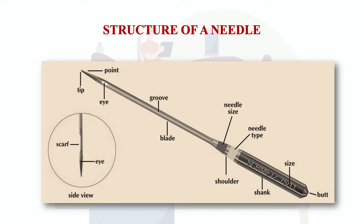The structure of a sewing machine needle is very different from a hand needle. When you see a machine needle, it has different parts, each named according to their purpose. The first part is the butt — a small pyramid at the upper end of the shank — which is the shaped end that fits into the needle bar.